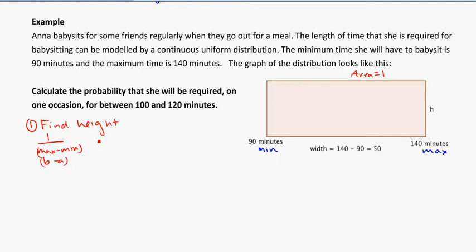Or 1 over (b minus a), if you want to think about it that way. But here we have 1 over max, which is 140, minus 90. That's going to get me 1 over 50, which is equal to 0.02. And that is equal to my height, the very first thing that I'm going to have to do.